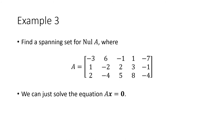Here's another example. We have a matrix A, and instead of asking whether a given vector is in the null space, I'm asking you to find a spanning set for the null space of A — a set of vectors whose span is the null space of A. To do that, we go back to the definition: we need vectors with A times x equals zero. We know how to solve that equation: set up the augmented matrix and row reduce it. Here's our row-reduced matrix.